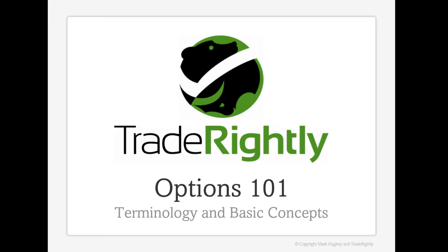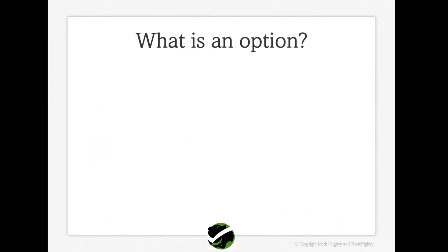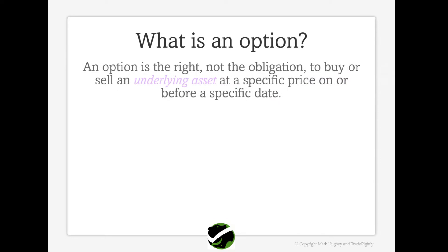So let's get started. What is an option? An option is the right, not the obligation, to buy or sell an underlying asset at a specific price on or before a specific date. There are several elements in there that we'll break down further in a little bit, including what an underlying asset is.